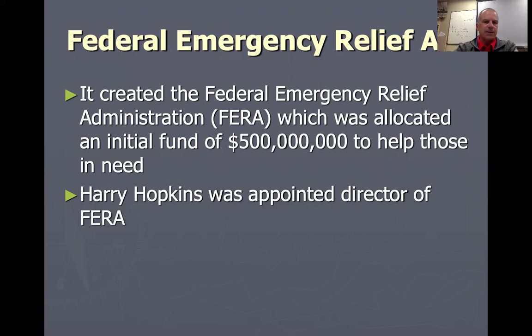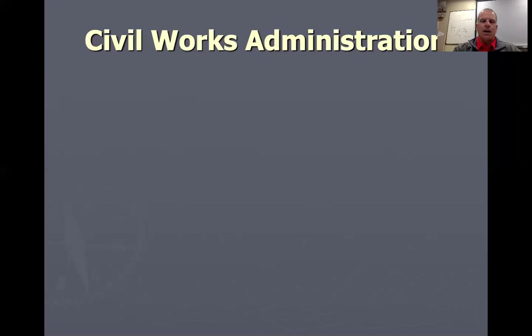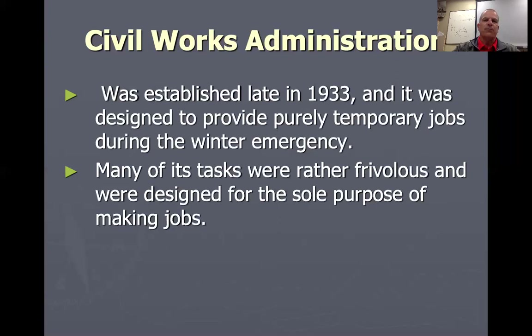FERA — the Federal Emergency Relief Act — was another alphabet soup organization. $500 million was allocated to give to people in desperate need — handouts, welfare payments. Someone like Hoover with his rugged individualism would not have approved of this. The CWA, or Civil Works Administration, established in 1933, was designed to provide temporary jobs during the wintertime. When winter hit, CCC workers would be laid off, so they might go to work for the CWA shoveling snow, something like that.